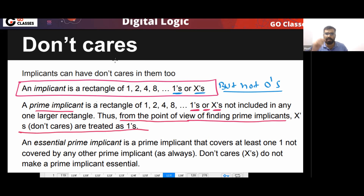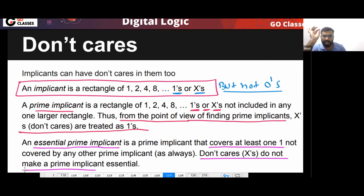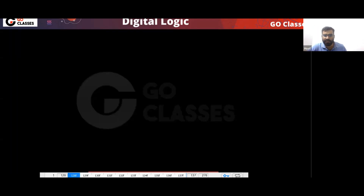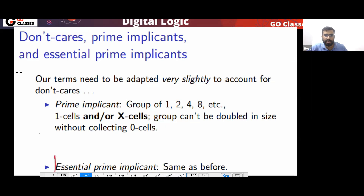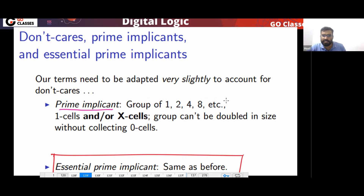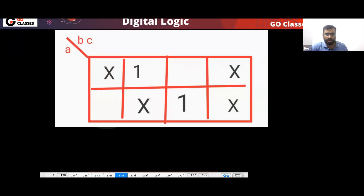Remember, don't cares are treated as ones when finding prime implicants, but the definition of EPA does not change. EPA definition: it covers at least one 1-cell uniquely. Do not make a prime implicant essential just by guessing. The prime implicant definition changes to include don't cares, but the EPA definition stays the same as before.